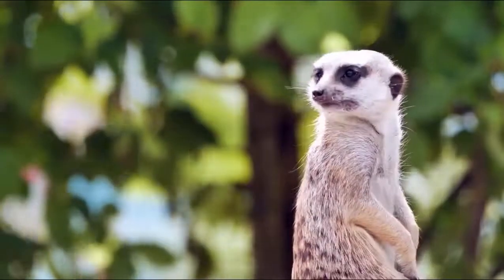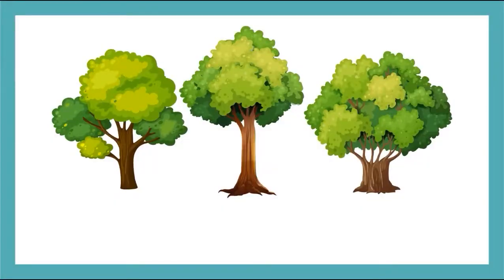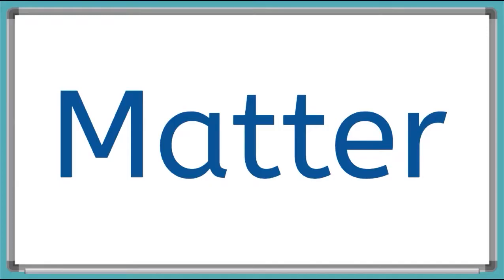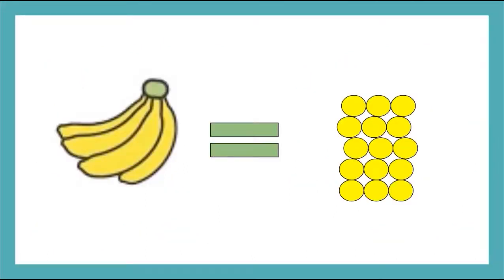Take a look around you right now. What do you see? Probably not just trees like the meerkat sees. Maybe some different things like your computer, a pencil, maybe even a snack. But what do all of these things have in common? They're all made out of matter. Everything that you see is made out of matter. But what does that actually mean? The definition of matter is anything that takes up space and has mass. That sounds like pretty much everything I can think of, which is true. Everything you see is made out of matter, but it's a bit more complex.